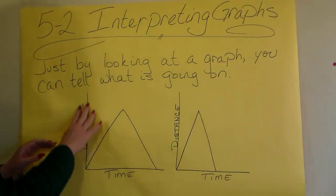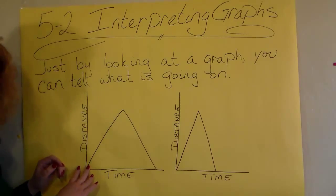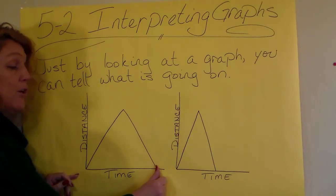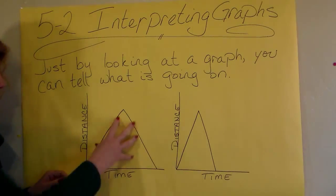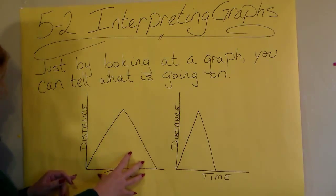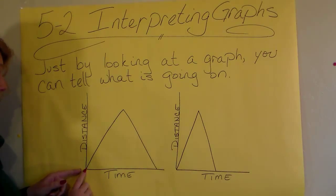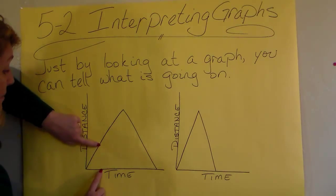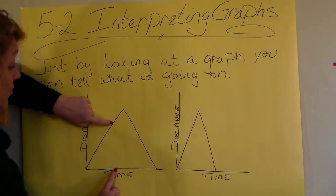And distance or whatever it is that you're measuring is going to go on the side because what you're doing is you're looking at something as time goes on. So for example, in this graph, as time goes on, I increased, as time goes on, I increased my distance away from whatever.